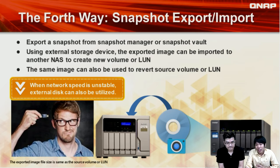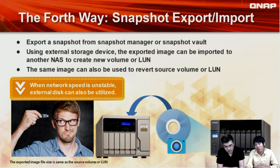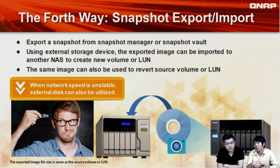Besides network-based methods, if a user's network is slow, we also provide the snapshot export and import feature. Users can export snapshots to an external storage device or USB drive, then insert that device into the destination NAS and import it to revert the source volume or iSCSI LUN. This allows users to recover snapshots from a remote NAS even when the network is unstable or slow.